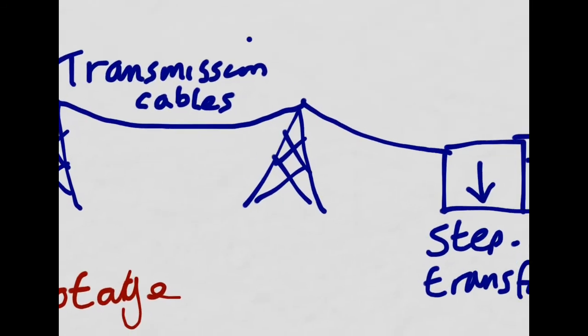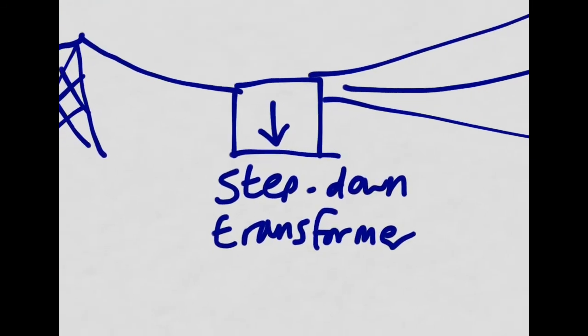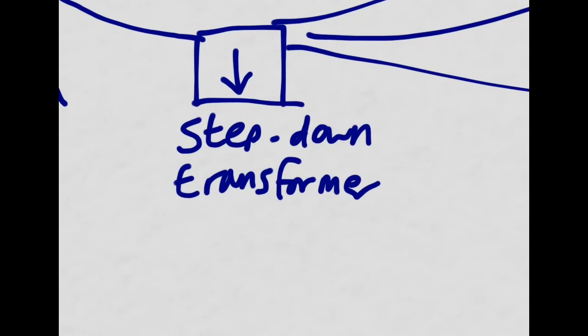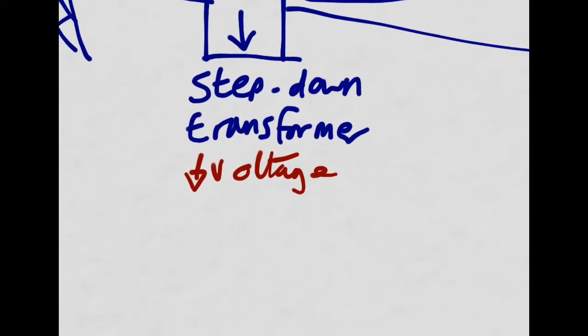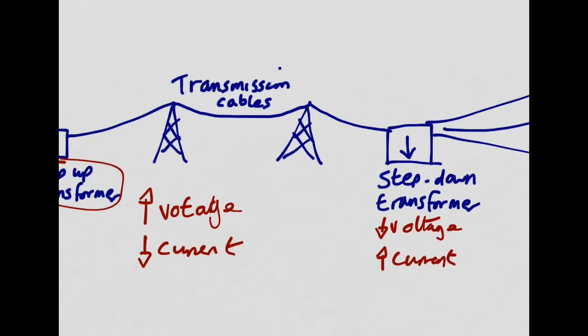When we get to the other side towards the consumer end, we've got step-down transformers which is going to reduce the voltage. But that is going to increase the current. So back to normal levels again. We're going to reduce the voltage because this step-up transformer is actually going to increase the voltage, so somewhere around 400,000 volts.